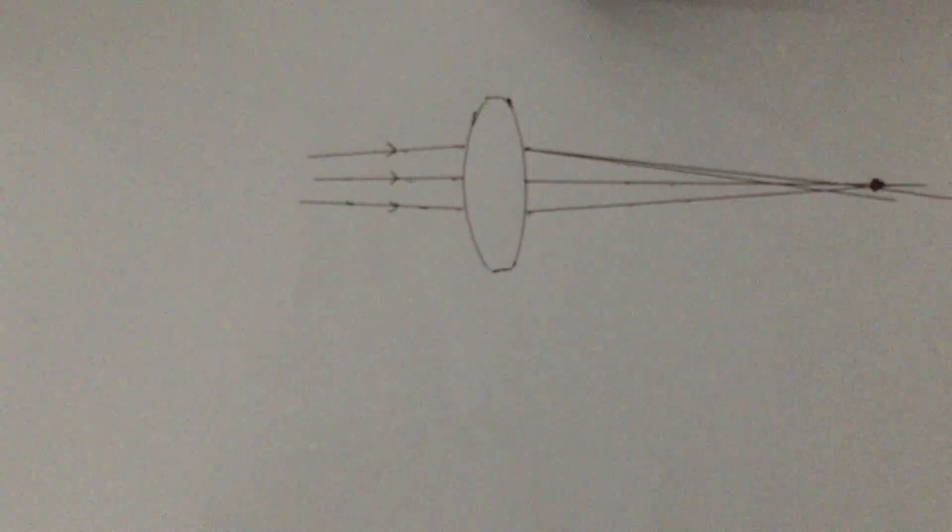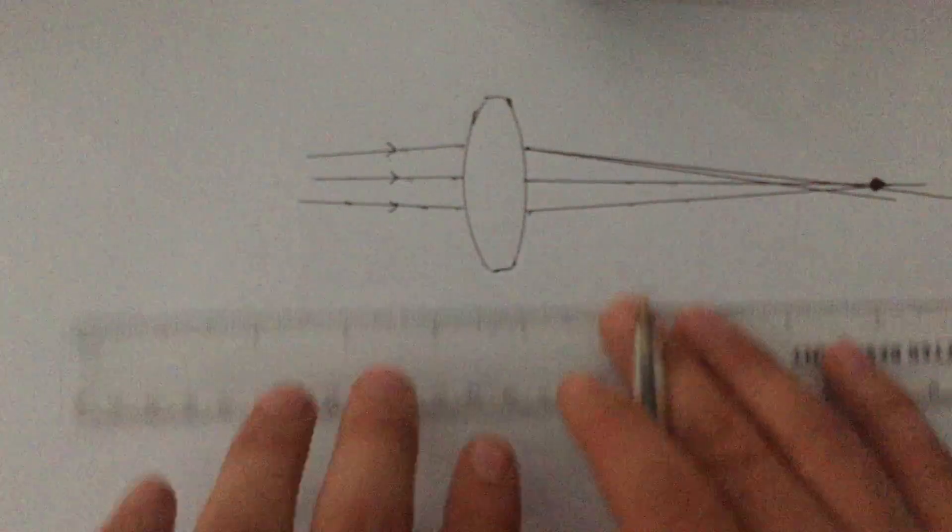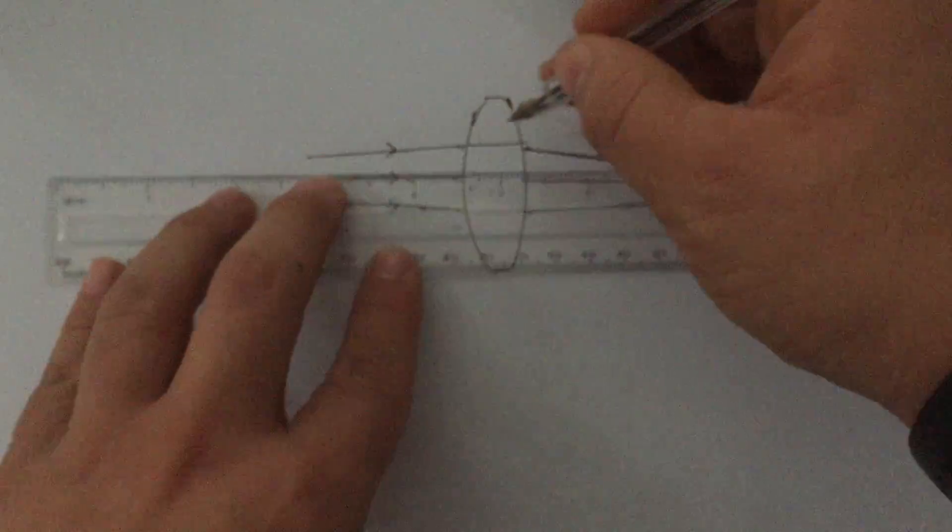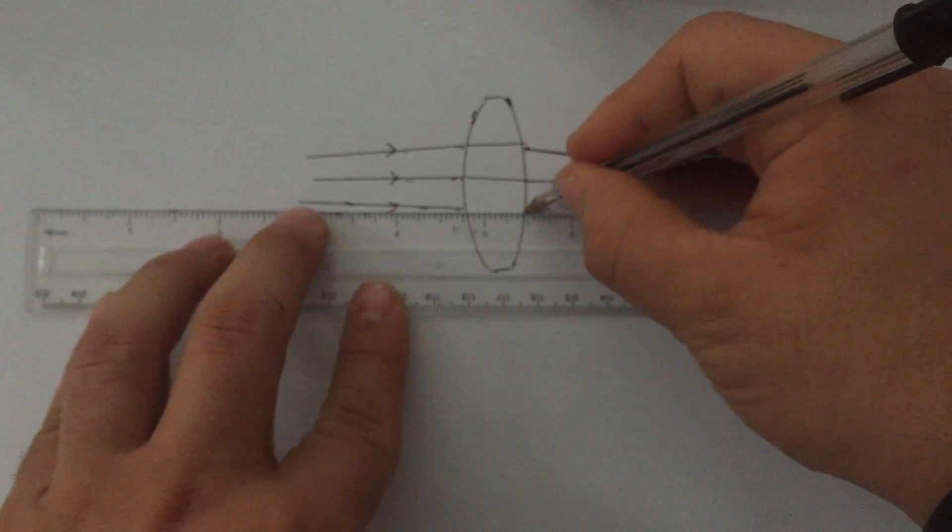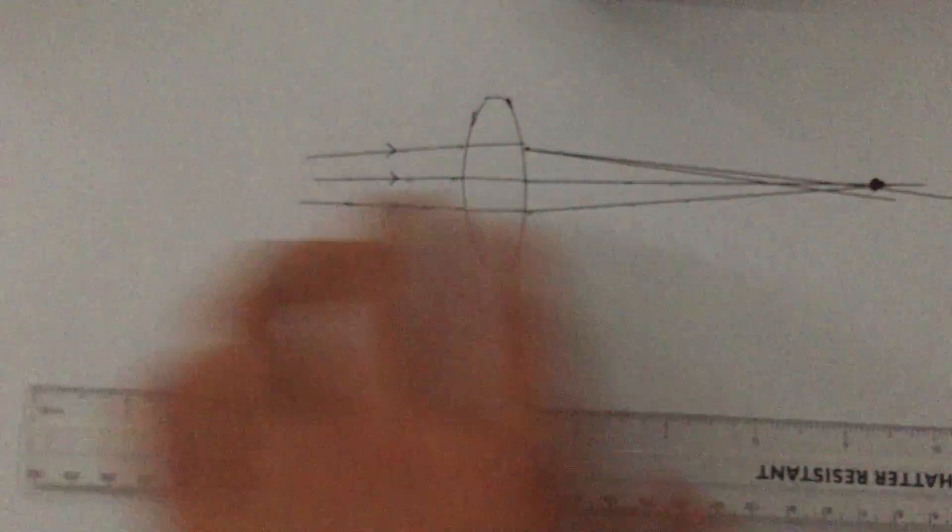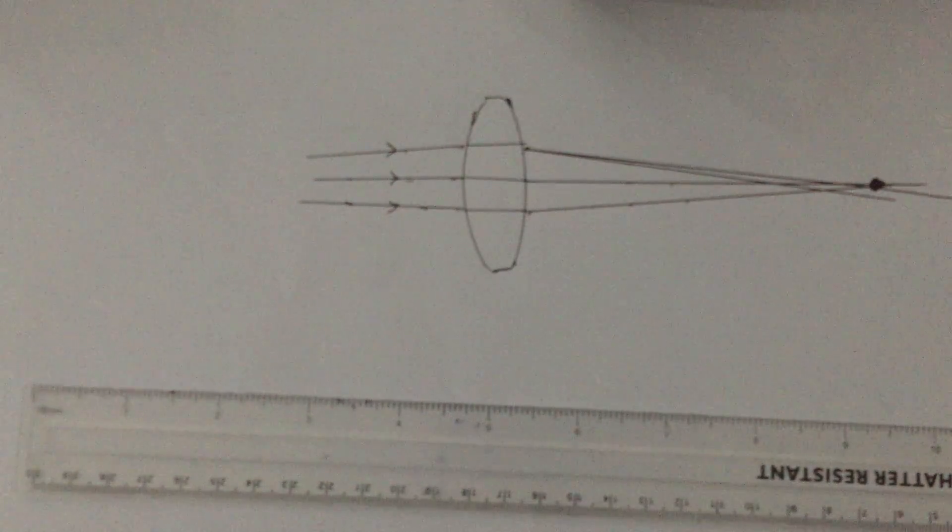What I'm going to do is, obviously between here, they just travel straight through the lens. So we just join them up. It's obviously refraction taking place here, which is what causes the lens to focus the light.